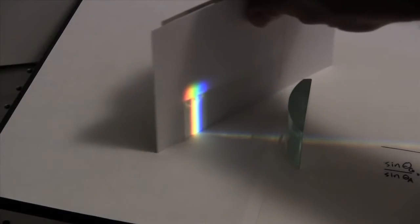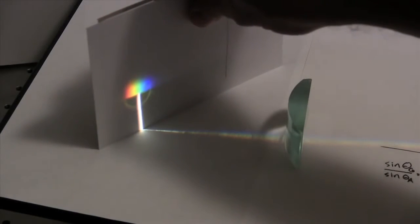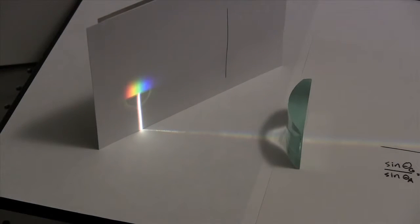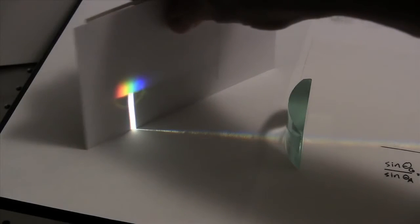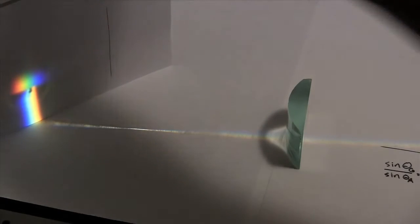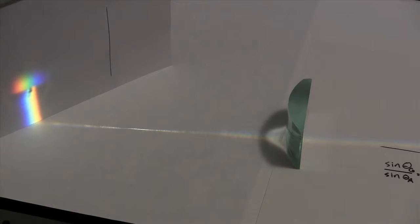As we move our screen away, the colors begin to overlap until at one point we see a band of white light. As we continue to move the screen further away, we see the same spectrum that we started with, but with the colors now reversed.